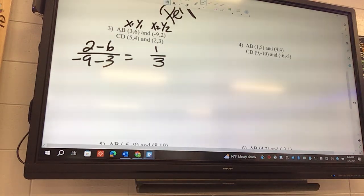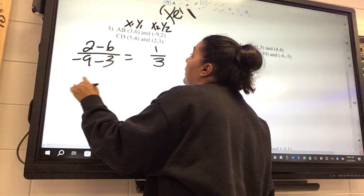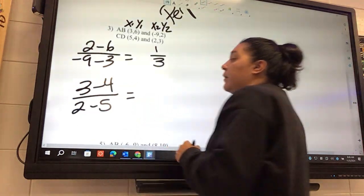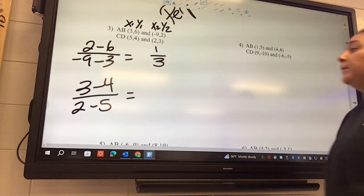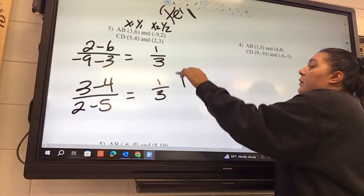You agree? I don't know what it is, but the second one is going to look like 3 minus 4 over 2 minus 5. 1 over 3. 1 over 3. Okay. So these are going to be parallel. Why are they parallel?